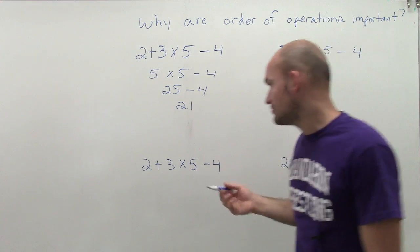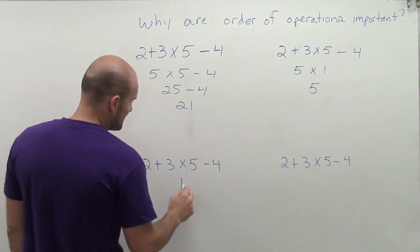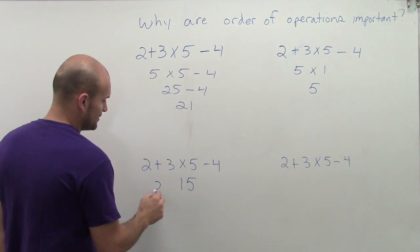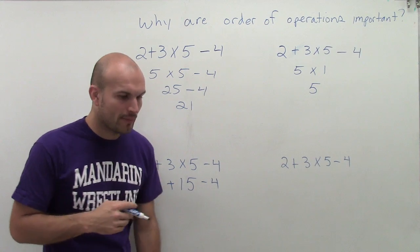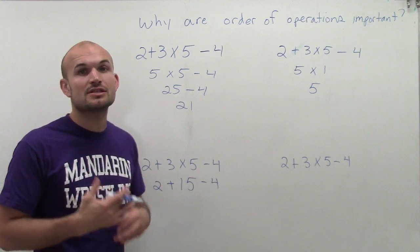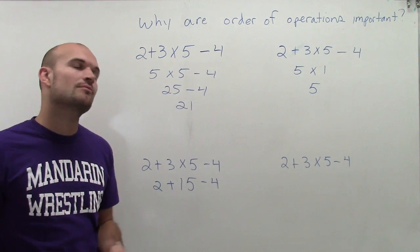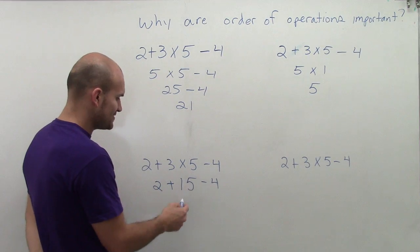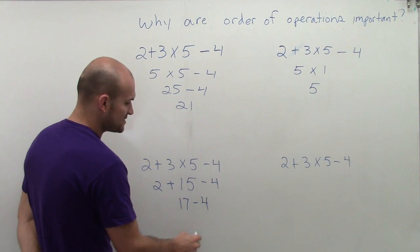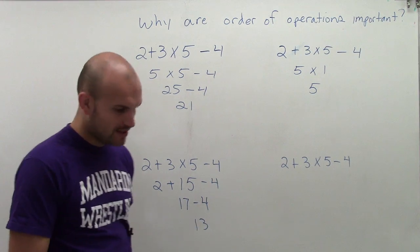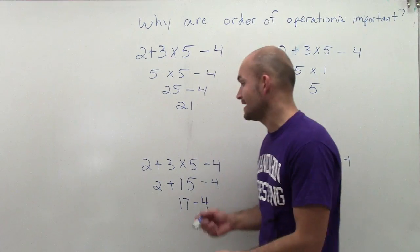The correct answer to make sure is we follow multiplication first. So 3 times 5 is going to provide us with 15. 2 plus 15 minus 4. Now the next rule of order of operations says to do addition and subtraction, but just make sure you do it from left to right. So 2 plus 15 is 17 minus 4. 17 minus 4 is going to give us 13. So that is going to be our actual answer.